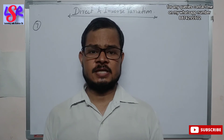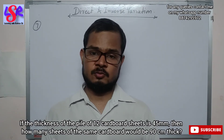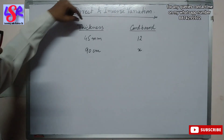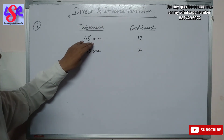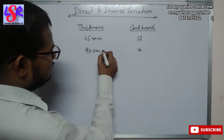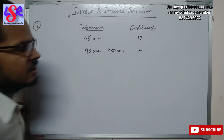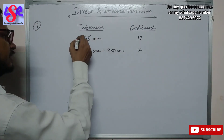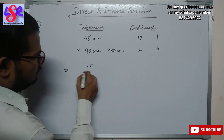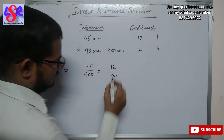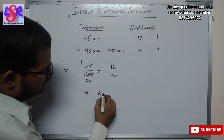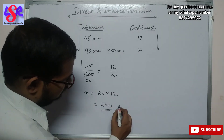Question number 7: if the thickness of a pile of 12 cardboard sheets is 45 mm, how many sheets of the same cardboard would be 90 centimeters thick? We have thickness and number of cardboards. First we equate units: 90 centimeters equals 900 mm. This is direct variation. We write: 45 upon 900 equals 12 upon x. Cross multiplying: x equals 20 into 12, giving x equals 240 cardboards as the answer.